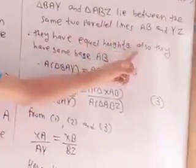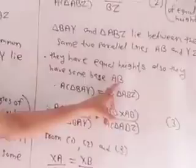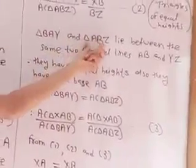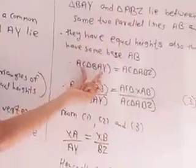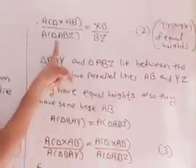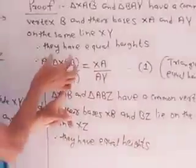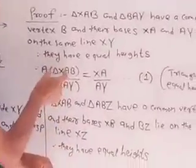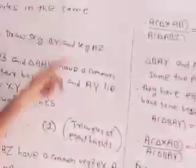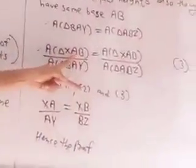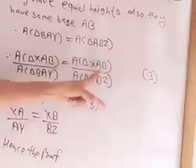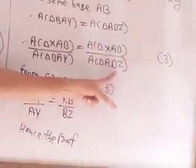Also, they have the same base AB. Since the base is the same and the height is equal, both triangles are equal in area. Therefore, area of triangle BAY equals area of triangle ABZ. Since these denominators are equal and the numerator is the same, both ratios are equal. Therefore, area of triangle XAB upon area of triangle BAY equals area of triangle XAB upon area of triangle ABZ. This is Equation 3.